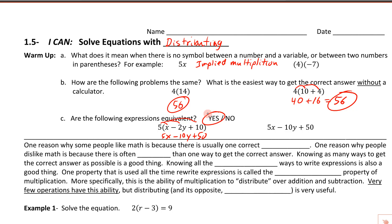The answer is yes. You might notice that every single term in 5x minus 10y plus 50 has a factor of 5 in common. So we could factor out the 5: dividing each term by 5 leaves us with x minus 2y plus 10. That's the original expression. So factoring is the reverse of distributing.